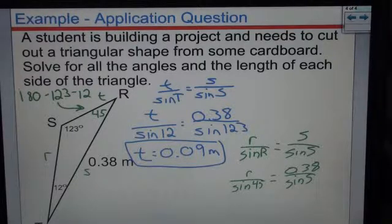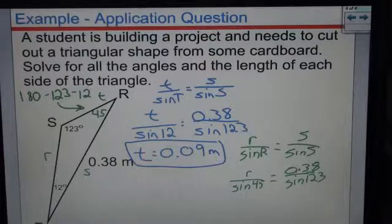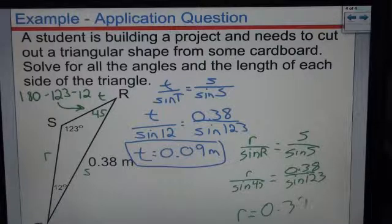Let's fix that. I wrote an s by accident. And again, I multiply sine 45 by the 0.38 divided by the answer to sine 123. And I get r equal to 0.32 meters.